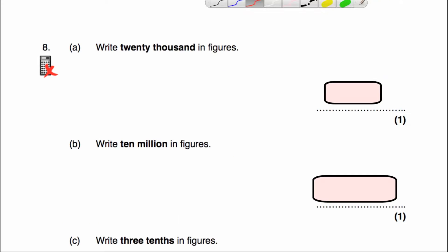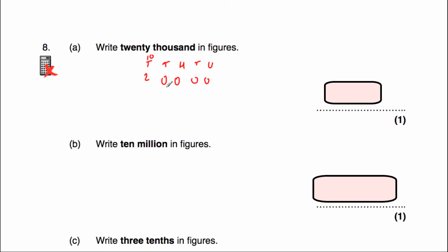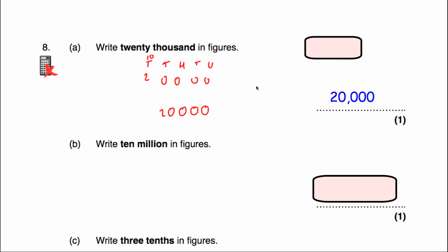Question 8 says to write the number 20,000 in figures. Considering our place value columns: tens of thousands, thousands, hundreds, tens and units. We've got 20,000, so that's a 2 in the tens of thousands column and then 0 in each of the rest. The answer is 20,000, or a 2 followed by 4 zeros.